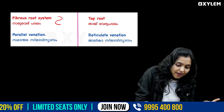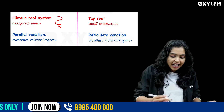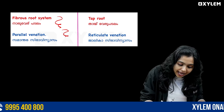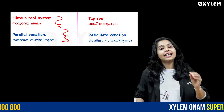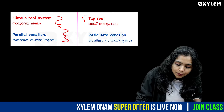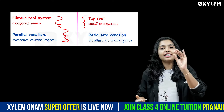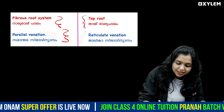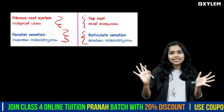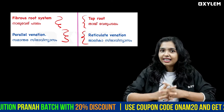Yes, the fibrous root system is all around. That is the venation. The taproot system is associated with reticulate venation, and the fibrous root system is associated with parallel venation.